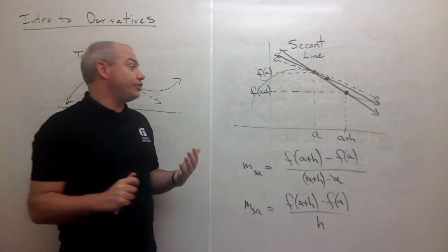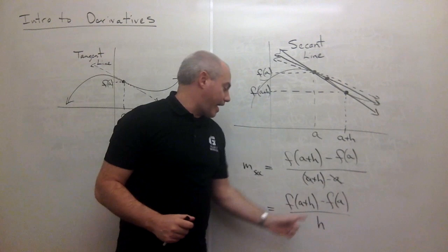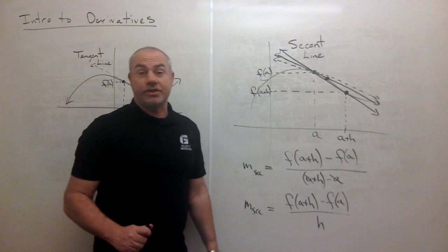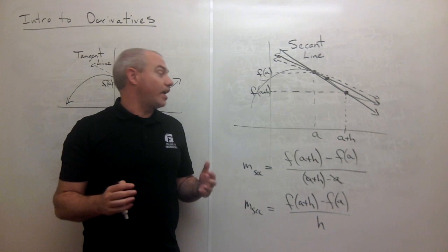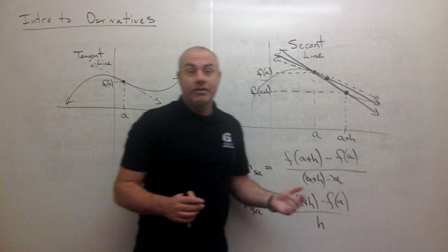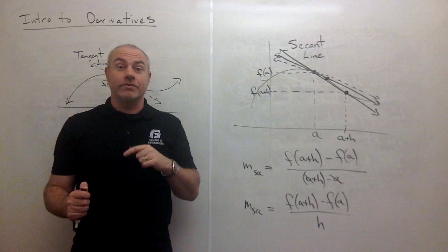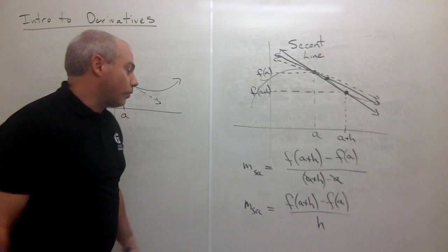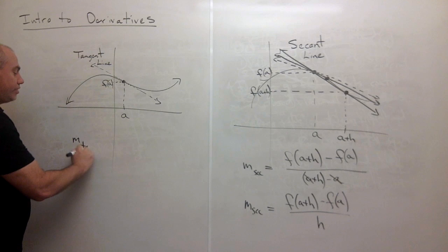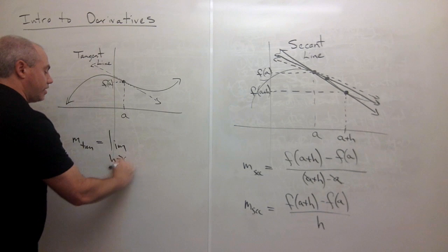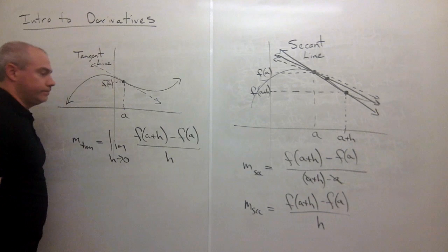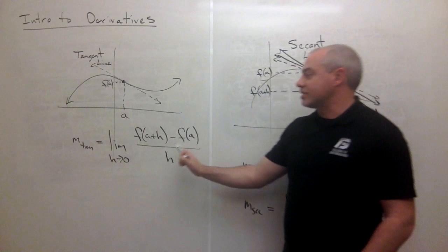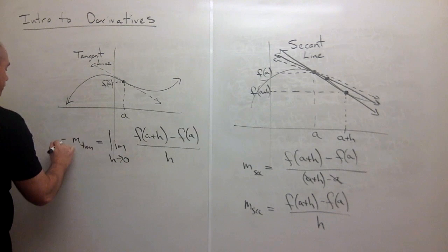Can h just be zero? If h is zero, then we get f of a minus f of a over zero, which is zero over zero — that's undefined. So I can't let h be zero. But if I let h get very, very small, everything is okay, because in the limit as h goes to zero, h is never actually zero. So to find the slope of the tangent line, I take the limit as h goes to zero of f of a plus h minus f of a, all over h.